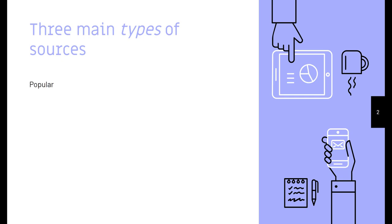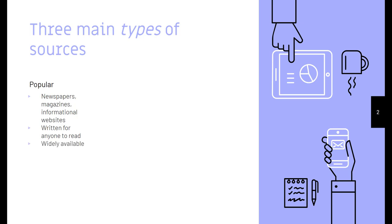The first type is popular sources. Popular sources include newspapers, magazines, informational websites, and so on. They're written for anyone to read, meaning that generally speaking, you don't have to have a very high education level to read most newspapers. For example, the Chattanooga Times Free Press is written at about a fifth grade reading level. They're widely available, so you can get the newspaper at the grocery store.